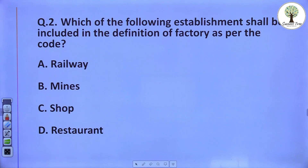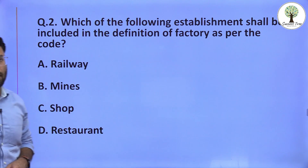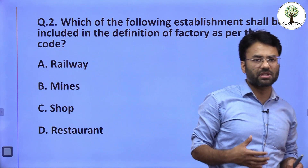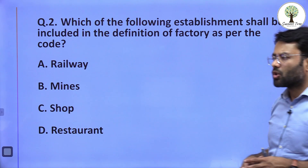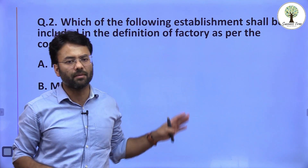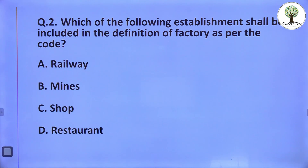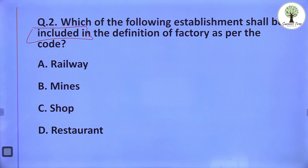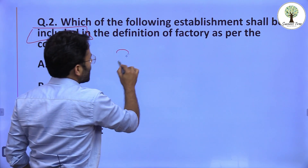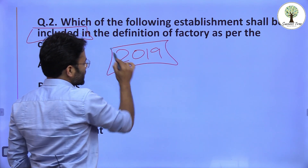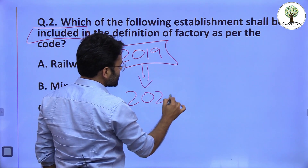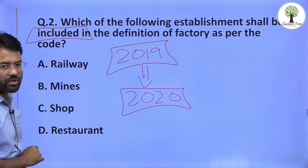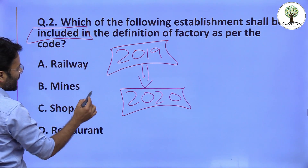Question number two: which of the following establishments shall be included in the definition of factories as per the code — whether the Code on Industrial Relations or the Code on Occupational Safety, Health and Working Conditions? We need to identify which establishment is included in the factory definition. This question arose because a code came in 2019 but changes were made in 2020.